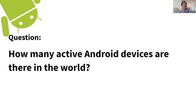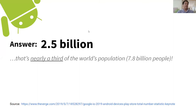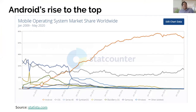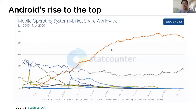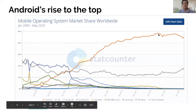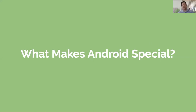Let me ask you a quick question: how many active Android devices do you think there are in the world? The answer is 2.5 billion — basically a third of the world's population. Looking at a graph of market share, the orange line for Android has been on a very steady rise for the last 10 years and is right around 80% of all phones now. So what was it that made Android so successful — what makes Android so special?